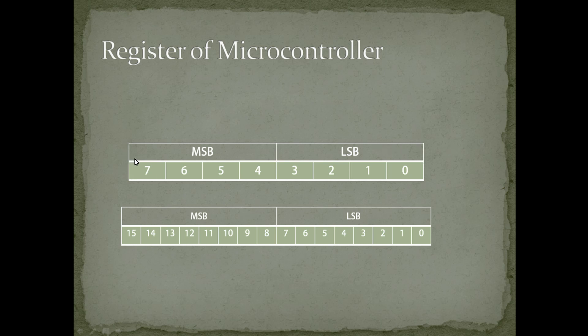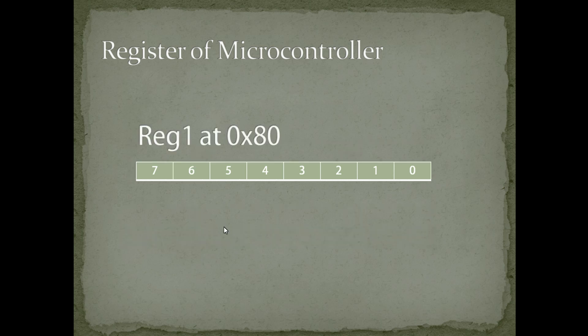In an 8-bit register, if you divide it into two halves, the lower bits 0 to 3 are known as LSB — least significant bits — and bits 4 to 7 are known as MSB — most significant bits. The same applies to a 16-bit register: bits 0 to 7 are the least significant bits and bits 8 to 15 are the most significant bits.